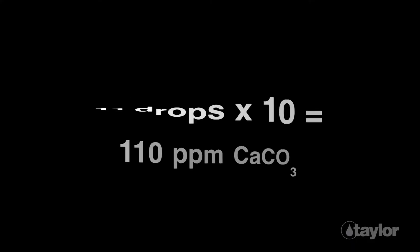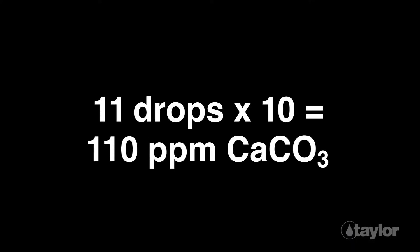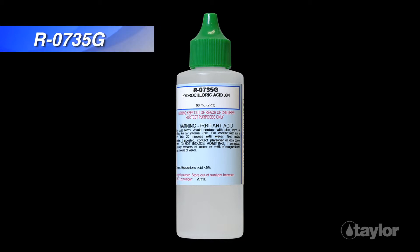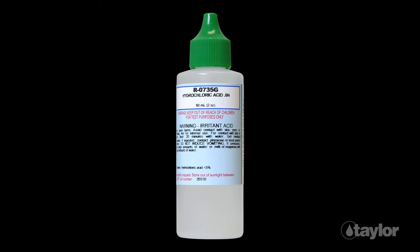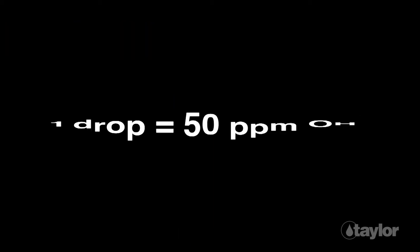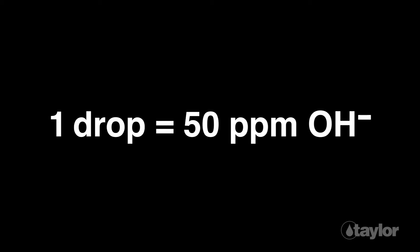Multiply the number of drops of hydrochloric acid 0.12N expended by 10 and record the results as parts per million hydroxyl alkalinity as calcium carbonate. For higher levels of hydroxyl alkalinity — anything over 200 ppm — follow the same procedure but use hydrochloric acid 0.6N as the titrant. This will result in a drop equivalency of one drop equals 50 ppm of hydroxyl alkalinity.